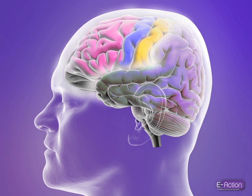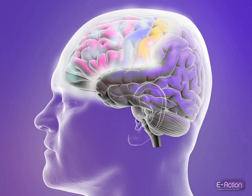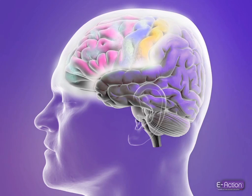The frontal cortex, including the motor and sensory cortices, are responsible for consciousness, movement, and physical sensation. Seizures occurring in this region include posturing seizures, in which the limbs are maintained in unusual positions for several seconds.